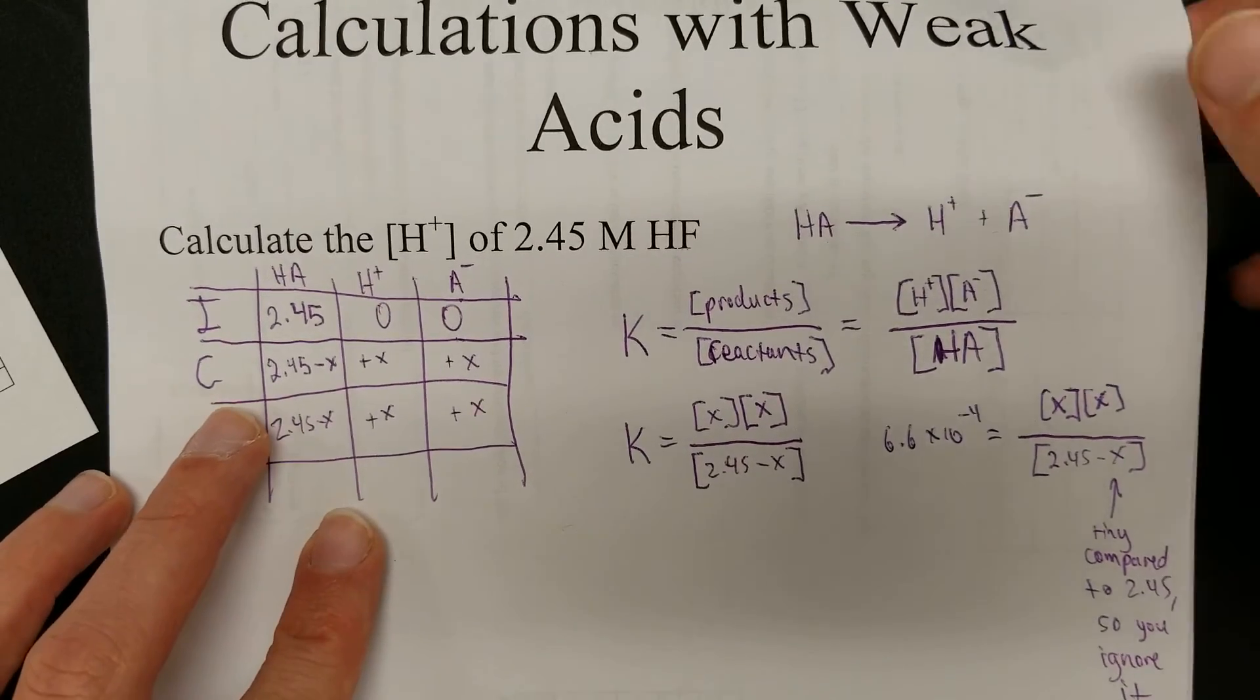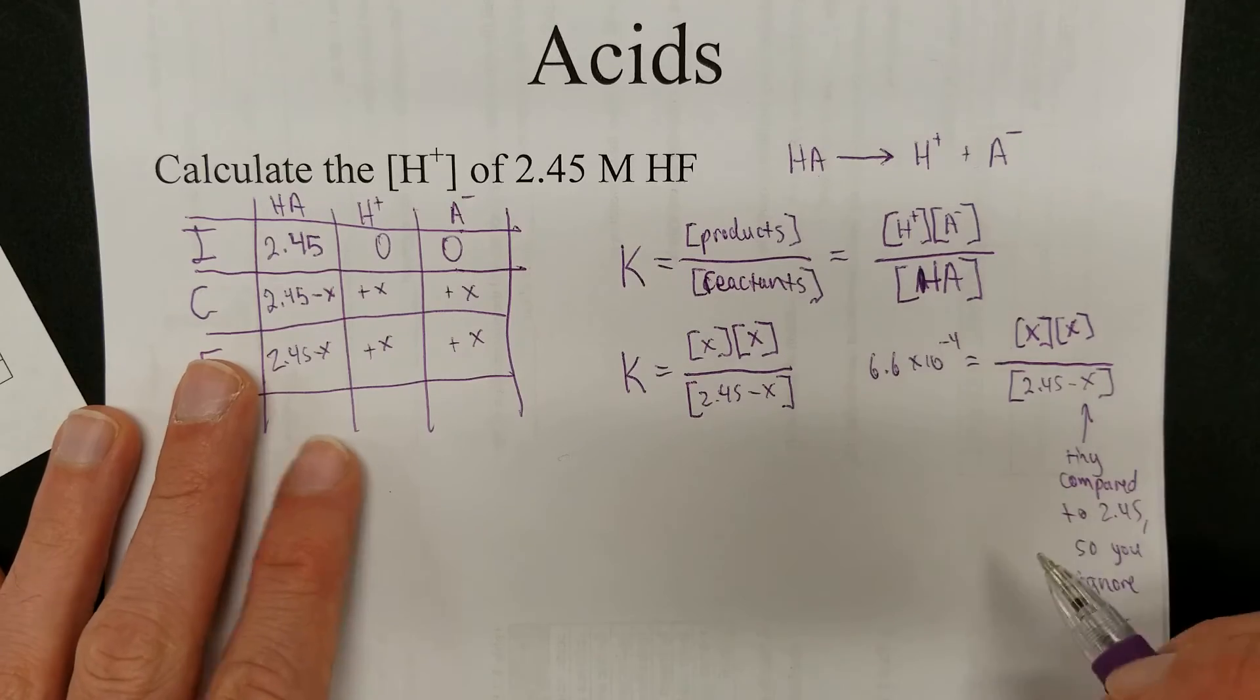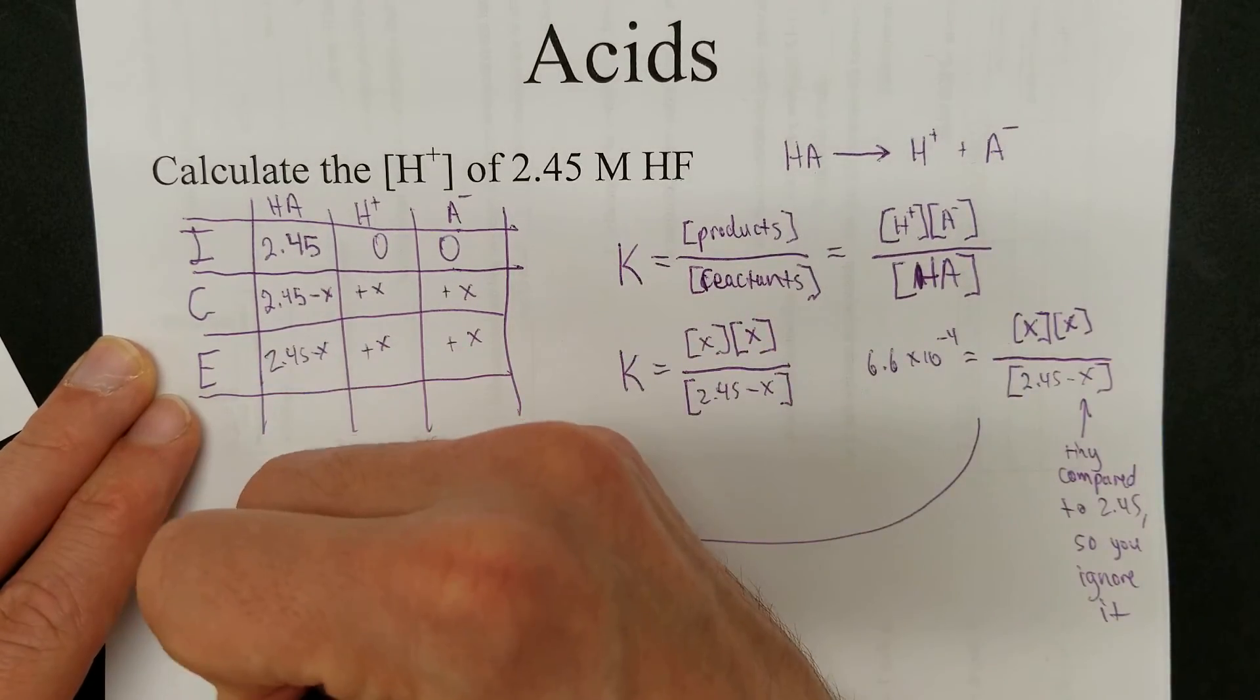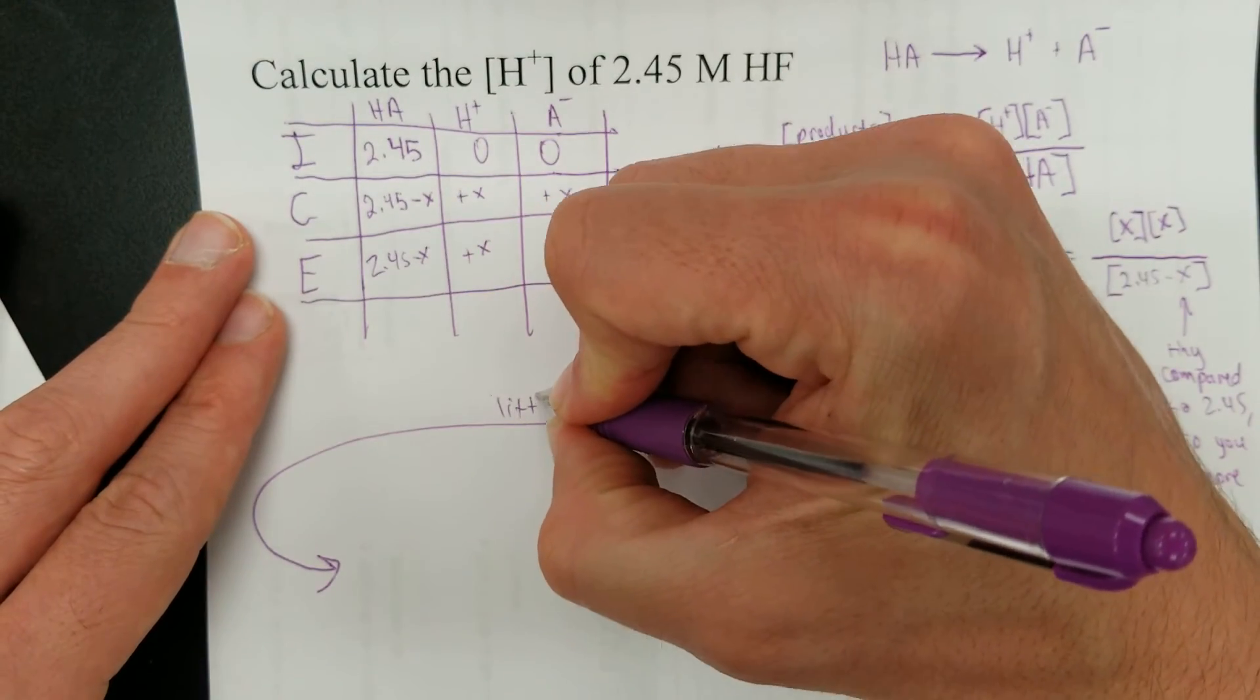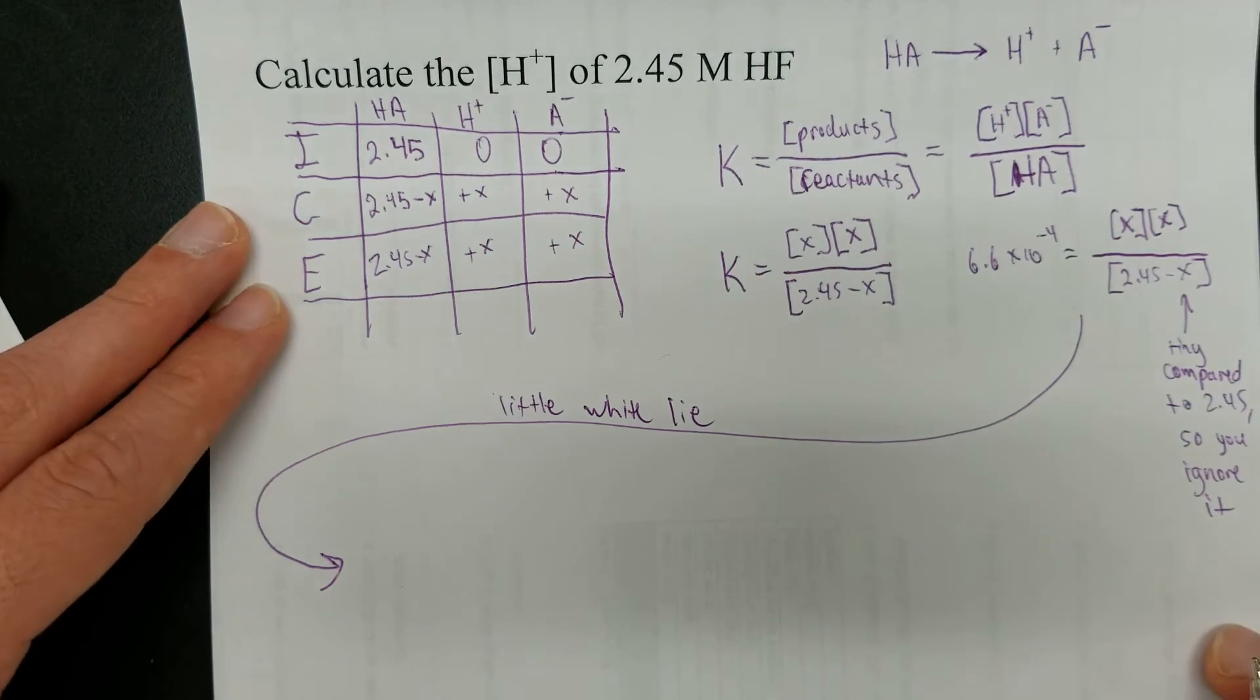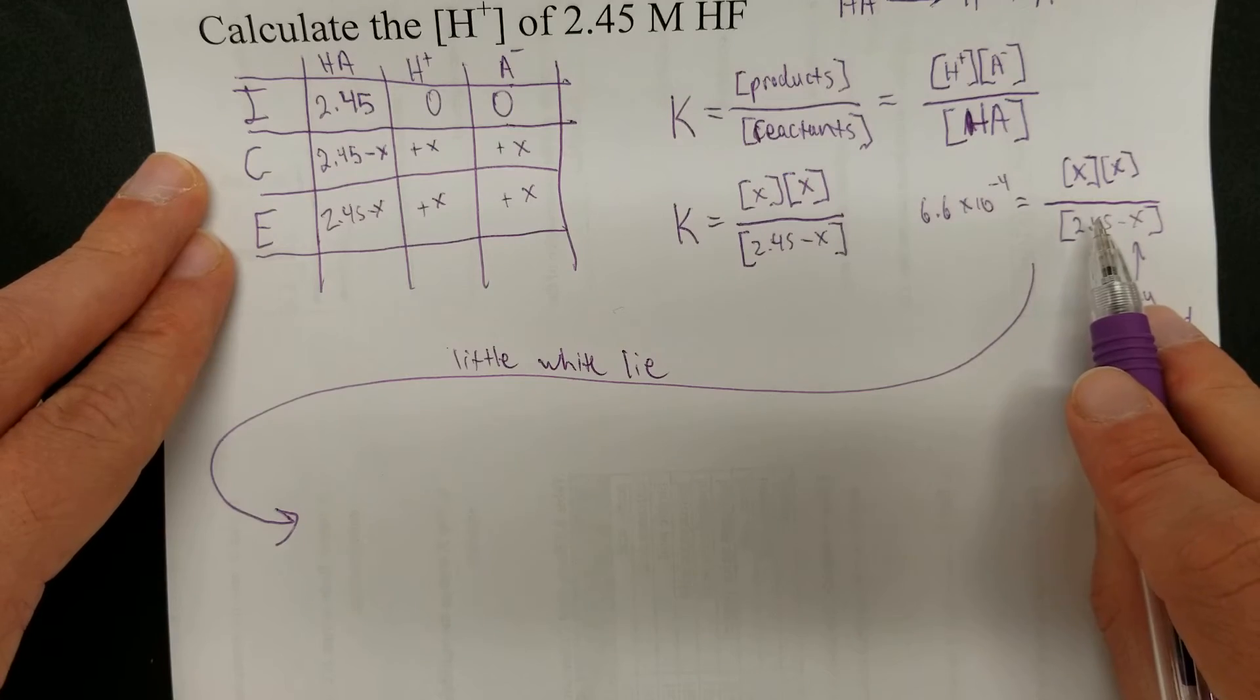Therefore, that allows us to make an approximation, which is kind of a lie. And yes, what I'm about to show you is a lie, but it's a little white lie that is close enough that it gets the job done. Little white lie. My little white lie is that this X is so small compared to this number that it doesn't even matter.